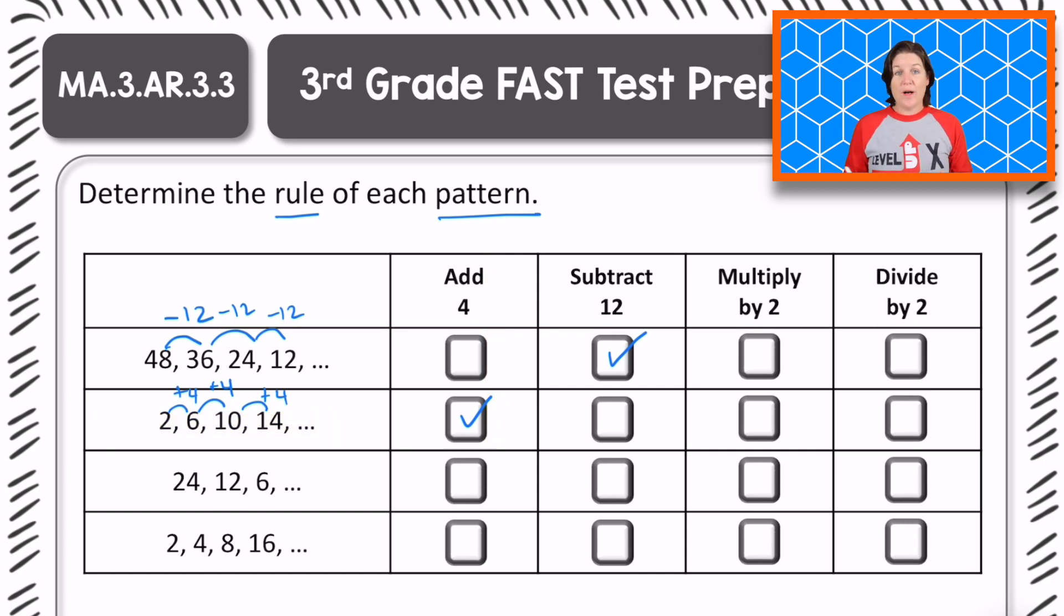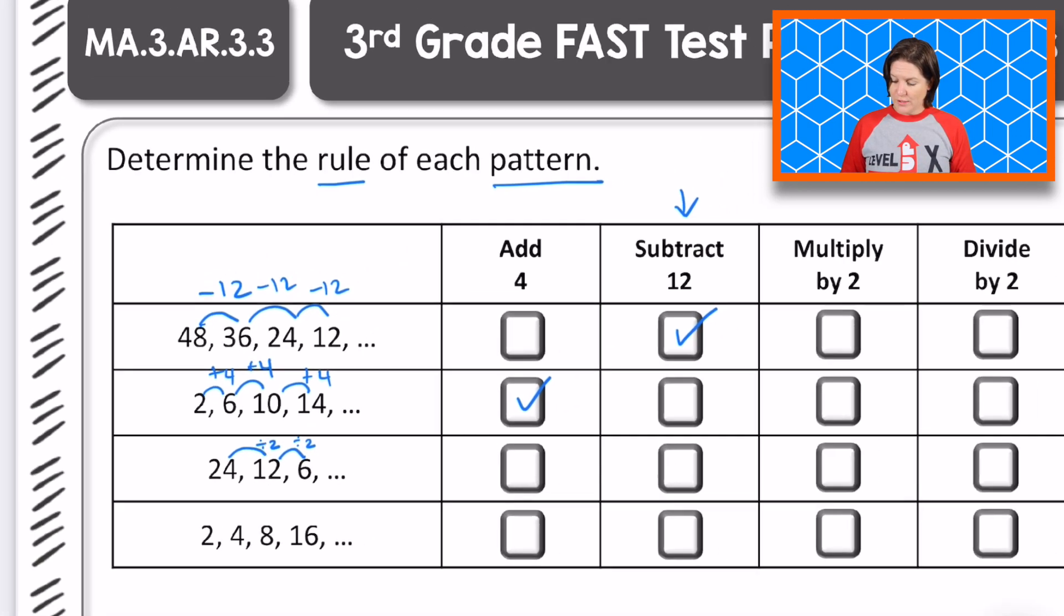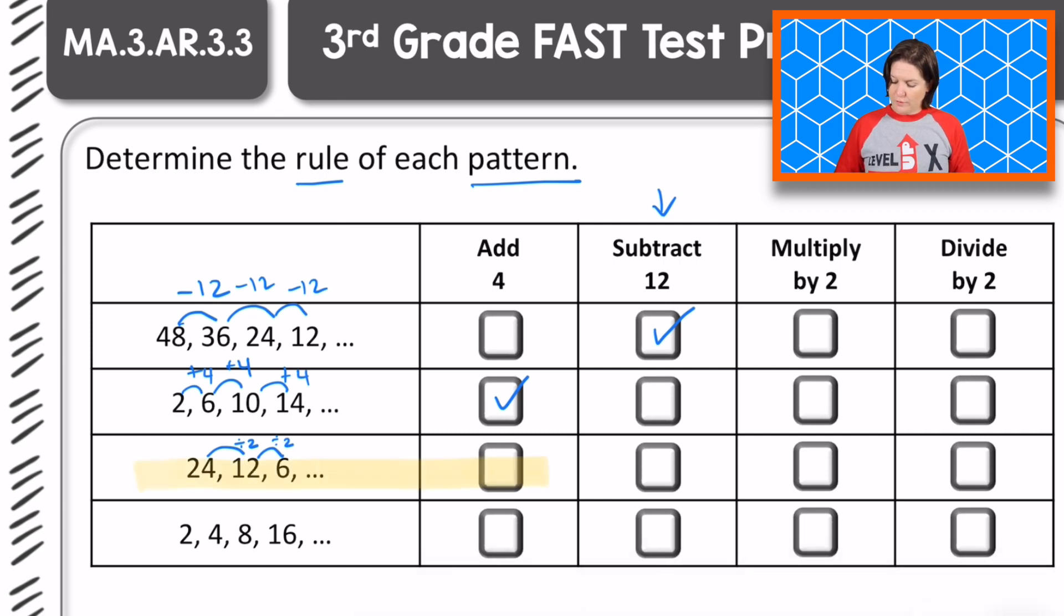For the next one, we have 24, 12, and 6. Are those numbers increasing or decreasing? They're decreasing, right? That means we are either subtracting or dividing, but we've already used subtraction. So let's try divided by 2 and see if that matches up. 24 divided by 2, does that equal 12? It does, because 12 times 2 equals 24. So the inverse would be 24 divided by 2 equals 12. Let's see if that pattern continues. 12 divided by 2, does that equal 6? Yes. So for this one, it is divided by 2. We'll scan over to the divided by 2 column and mark that.